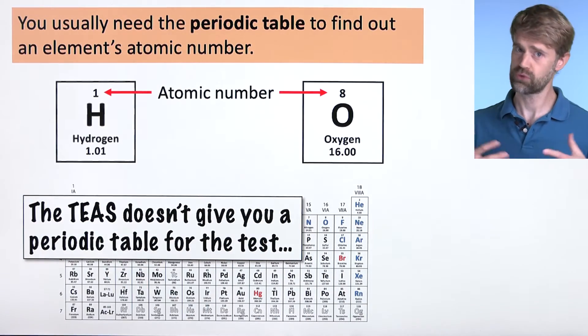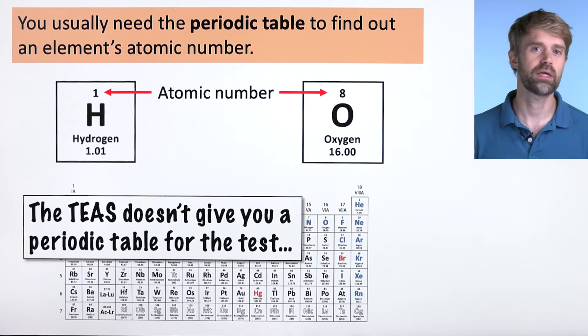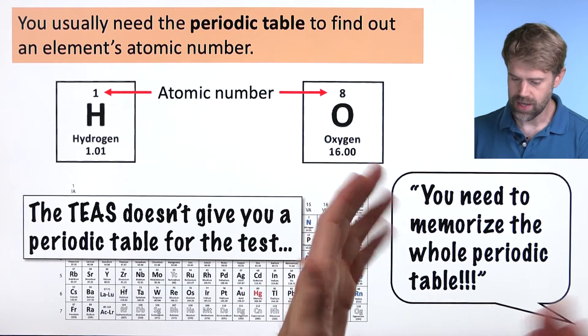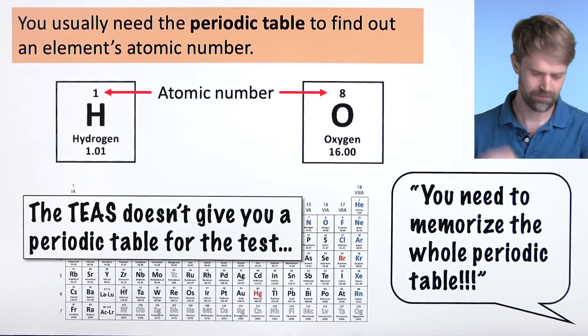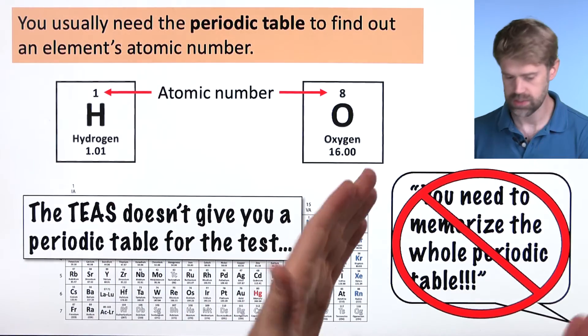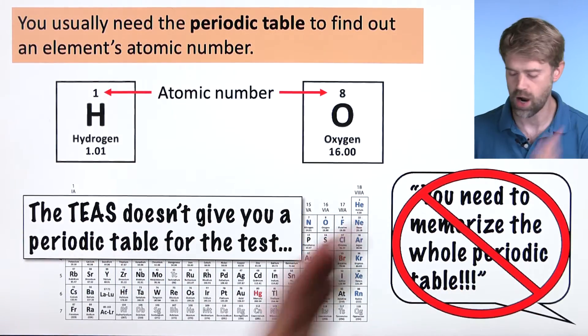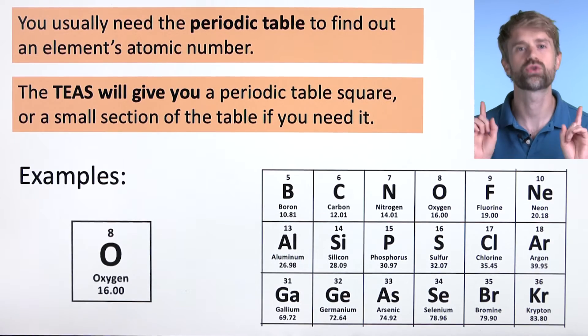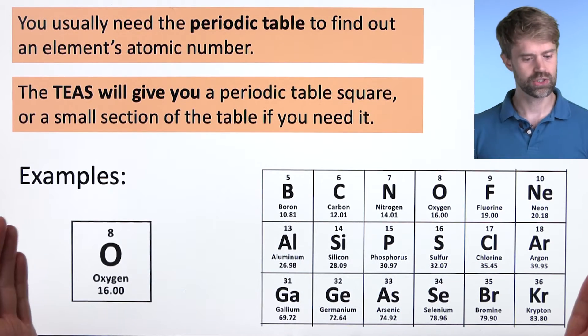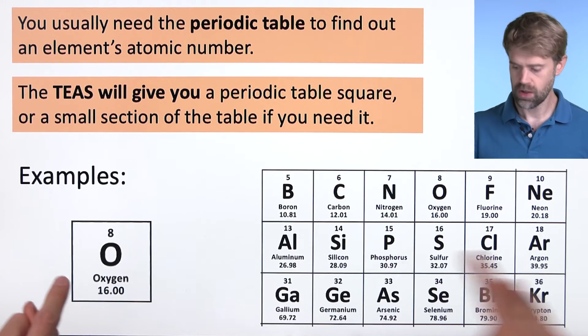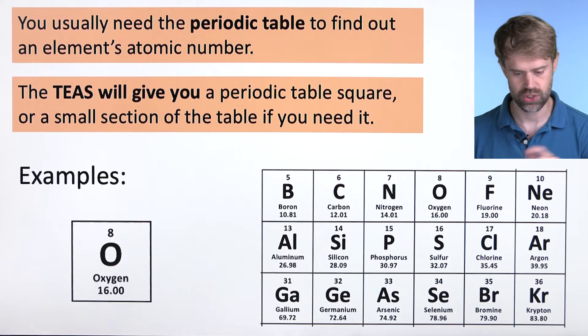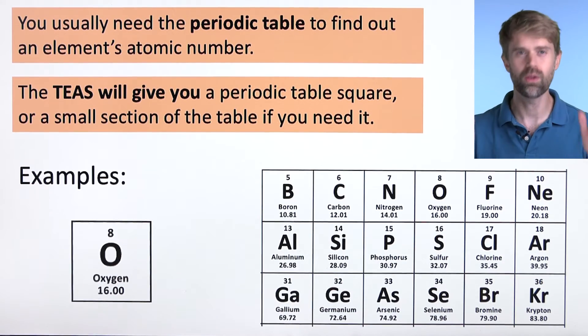Okay. Well, this presents a bit of a problem because you may know that the TEAS doesn't give you a periodic table for the test. So some people say, aha, you need to memorize the whole periodic table if you want to do well on the chemistry section. Don't listen to them. They're just trying to scare you. They don't know what they're talking about. The TEAS doesn't give you a periodic table for the whole test. That is true. But for a particular question, the TEAS may give you a periodic table square or a small section of the table or even the whole table if you need it for a particular question. So you don't have to worry about memorizing the whole table. Don't listen to anyone who tells you that you need to do that.